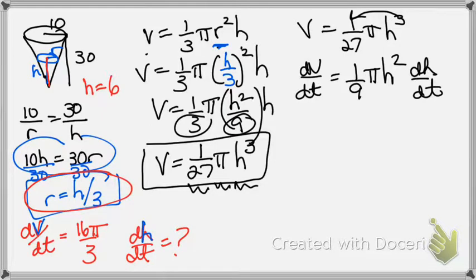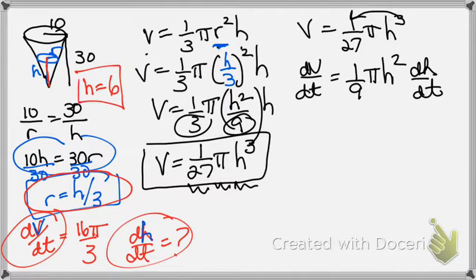Okay. What really matters is the dt's, the rates that they give you and the rate that they ask for. That's the most important thing to focus on. Not whether they give you h or r, but whether they give me dh/dt or dr/dt. That's what determined which variables to keep.